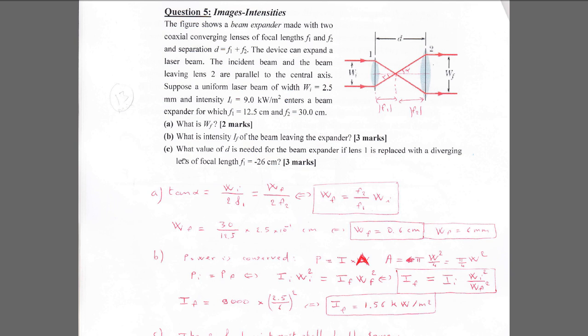For part 2B, what is the intensity of the beam leaving the beam expander? There is conservation of power, but because the area changes, the intensity will change. Power equals intensity times area, so if the area changes, the intensity changes while power is conserved.